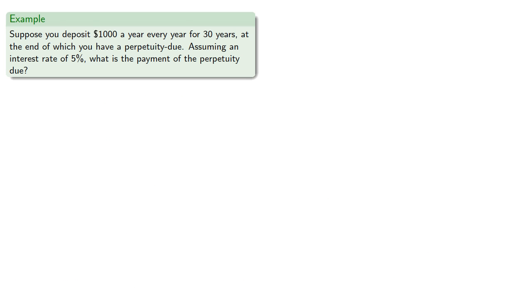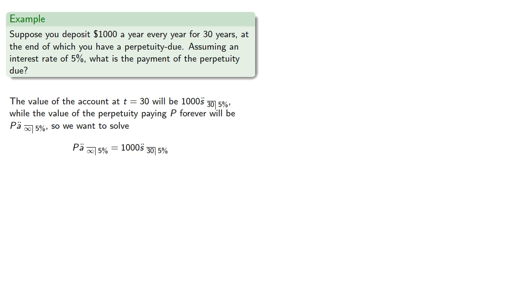For example, suppose you deposit 1000 every year for 30 years, at the end of which you have a perpetuity-due. Assuming an interest rate of 5%, what is the payment of the perpetuity-due? The value of the account at t equals 30 will be 1000 s double dot angle 30 at 5%, while the value of the perpetuity paying P forever will be P a double dot angle infinity at 5%. So we want to solve for when the value of the perpetuity equals the value of the account.